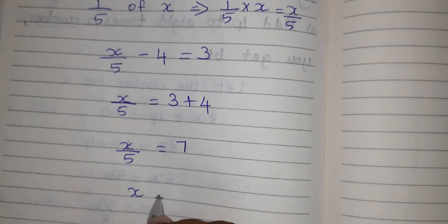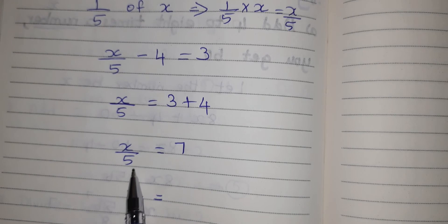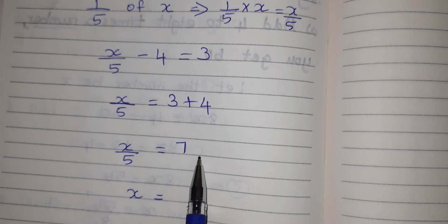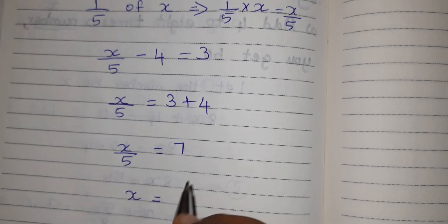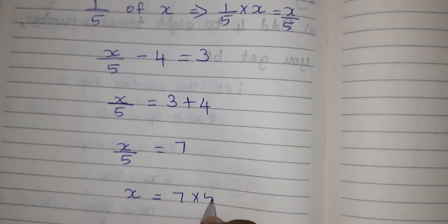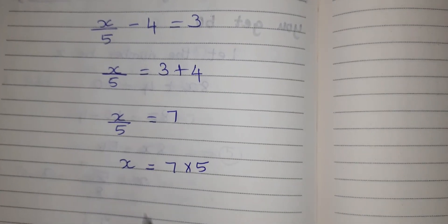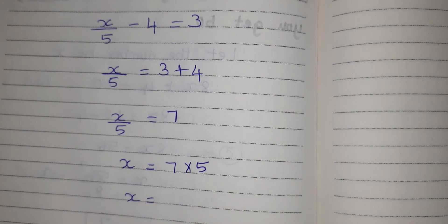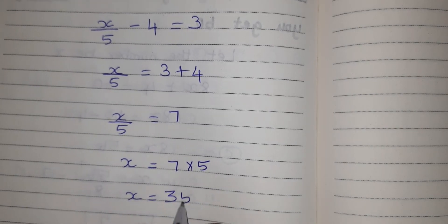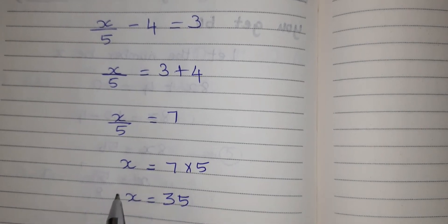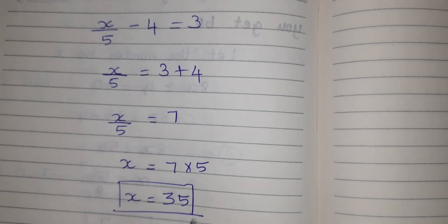So X by 5 equal to 7. Now keep X here, and 5 is in division. When it goes to this side it will become multiplication. So 7 into 5.